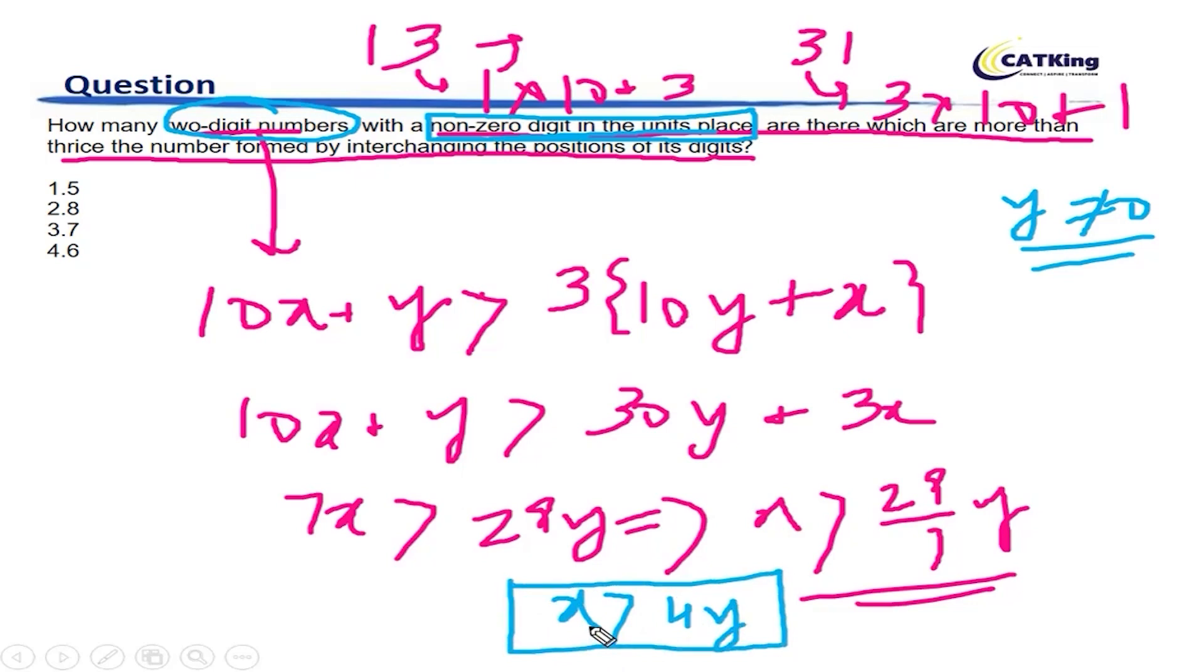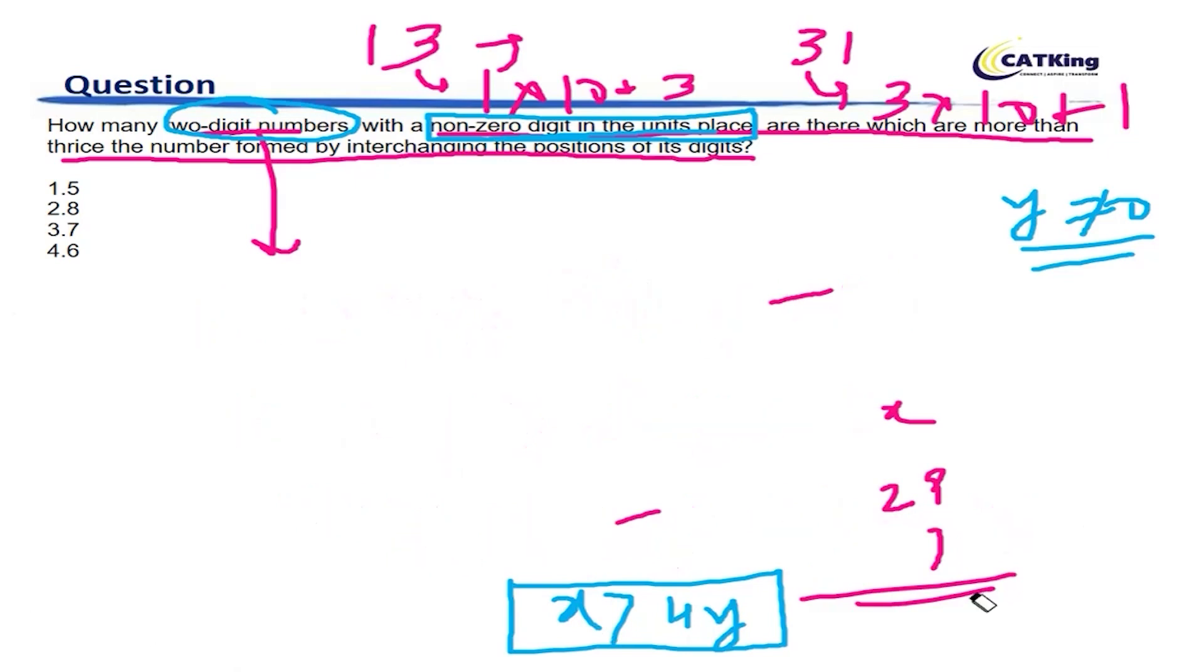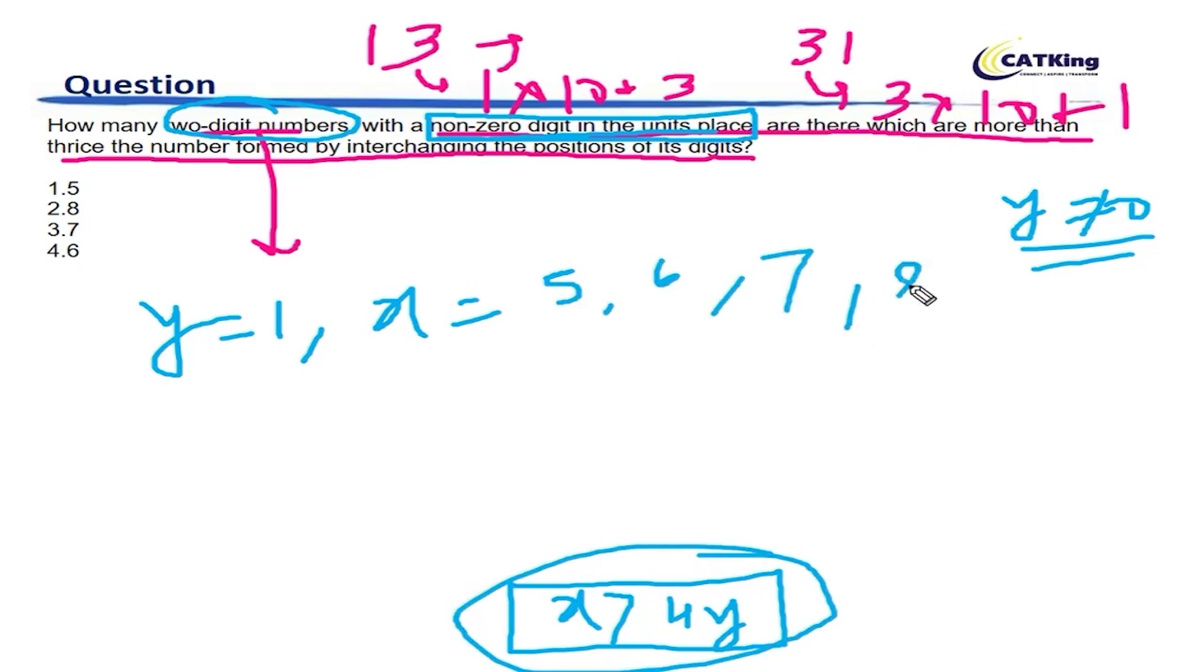Now we have to make cases. Y can't be 0, so y will begin from 1. If you take y is equal to 1, then x will be equal to 5. Following this, x will be equal to 5, 6, 7, 8, and 9. You can see for yourself that 51 is greater than 3 into 15.